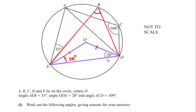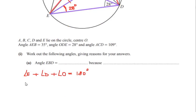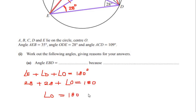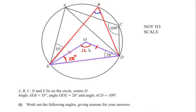Now once we have angle E and angle D we can find the third angle using the angle sum property of a triangle: angle E plus angle D plus angle O equals 180 degrees. Angle E is 28 and angle D is also 28, so angle O equals 180 minus 28 plus 28, which gives us 124 degrees. Let us mark that as 124 degrees.